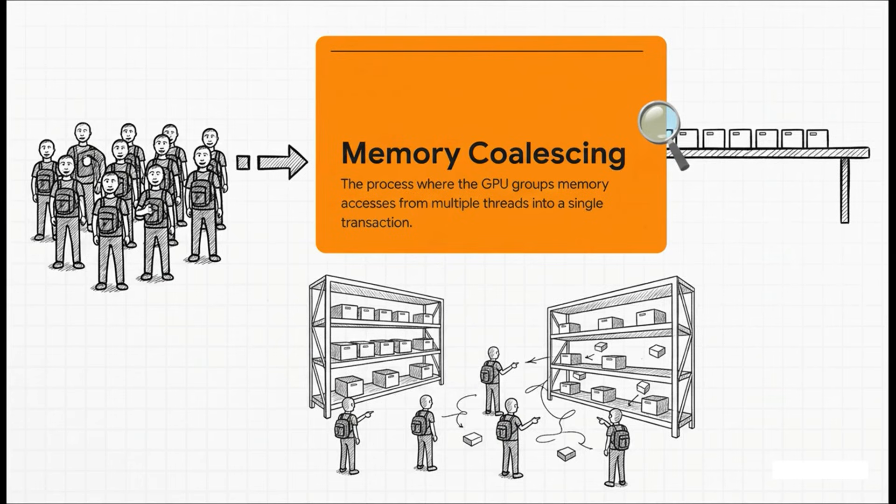So, one of the biggest hurdles, one of the biggest walls you hit in that optimization step is this concept called memory coalescing. Think of it like this. If 32 workers need to grab 32 items that are all sitting right next to each other on a warehouse shelf, it's super efficient. They can grab them all in one big trip. But what if those items are scattered all over the warehouse? Well, that's going to take 32 separate really slow trips. Getting this right is absolutely critical.